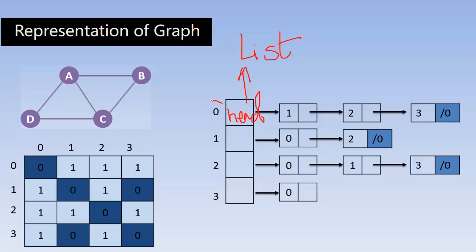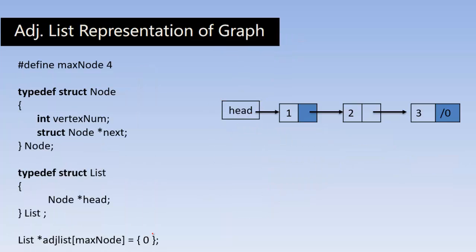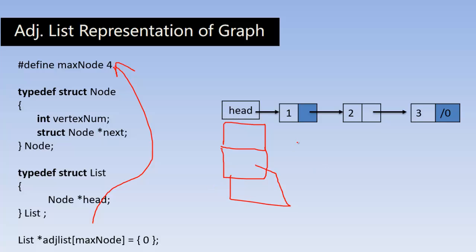One head node can hold the neighboring vertices of a single vertex, but I need an array of head nodes. I am creating an array called edge_list which represents the adjacency list for a maximum of four nodes. I need to represent four nodes using four head nodes. The type of this array is list, and I have initialized it with zero. Later I will change the content.